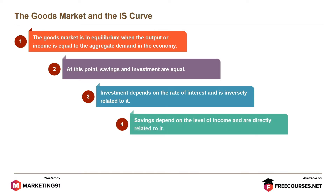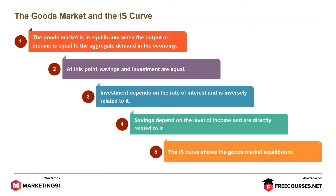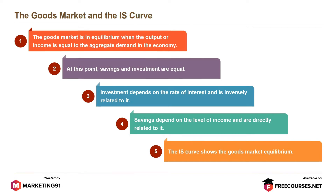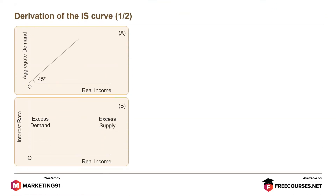Savings depend on the level of income and are directly related to it. The IS curve shows the goods market equilibrium. The derivation of the IS curve is as follows.